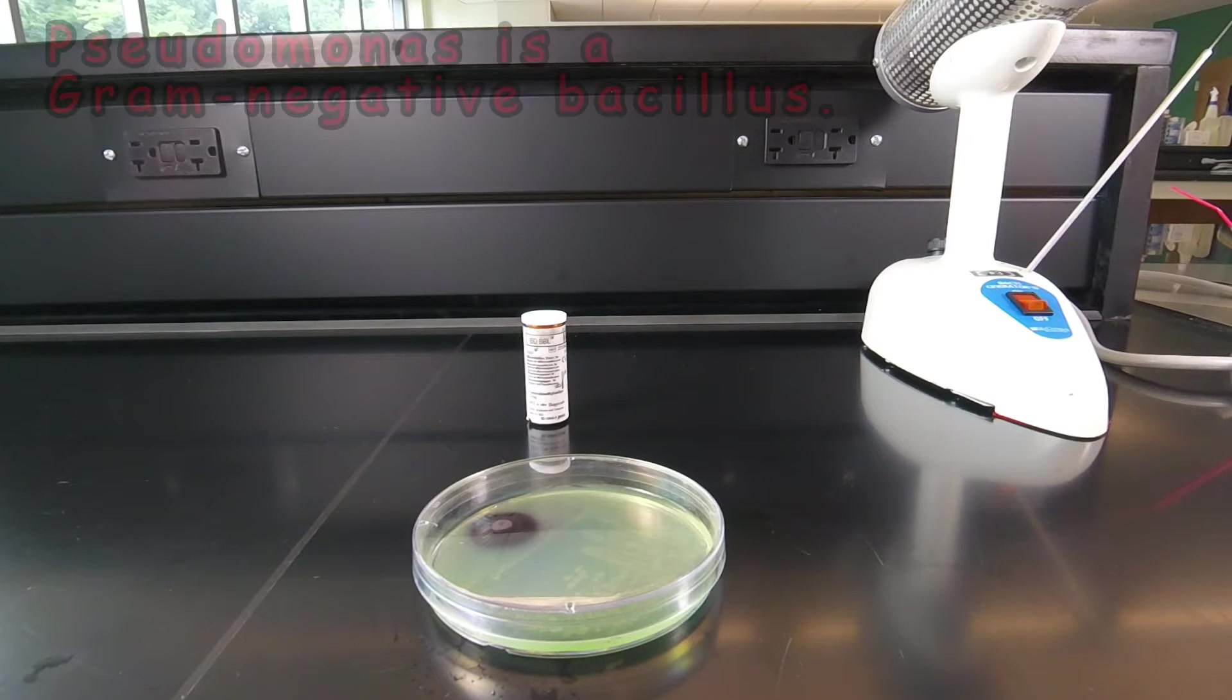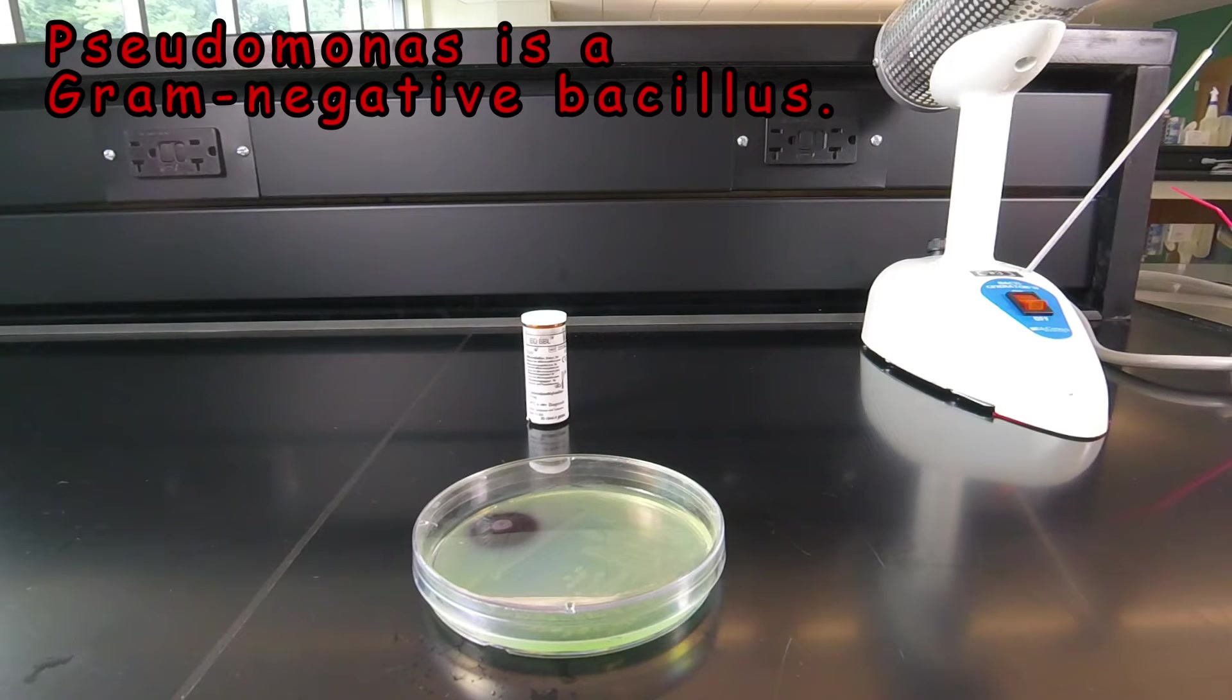So basically, after the Gram stain is done, we see Gram negative bacilli under the microscope.